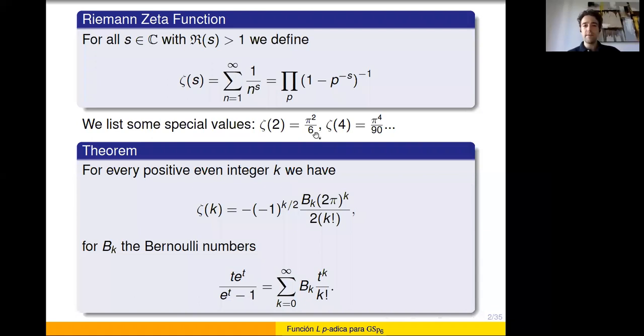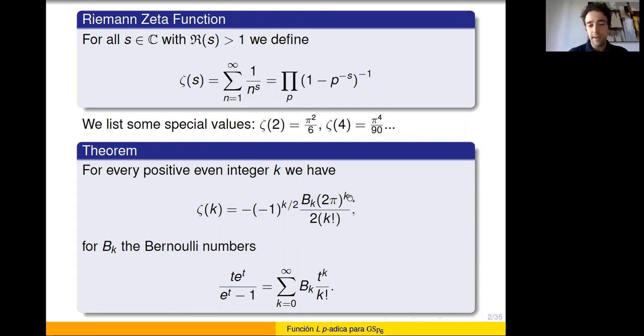It is known that zeta of 2, calculated by Euler, is pi squared over 6; zeta of 4 is pi to the fourth over 90, and so on. We know very well the value of the Riemann zeta function at positive even integers. Indeed, zeta of k, when k is even, is up to some sign the k-th Bernoulli number multiplied by 2 pi to the k, divided by (2k) factorial. So mysteriously, at all even integers, the Riemann zeta function is essentially a rational number times a power of 2 pi.